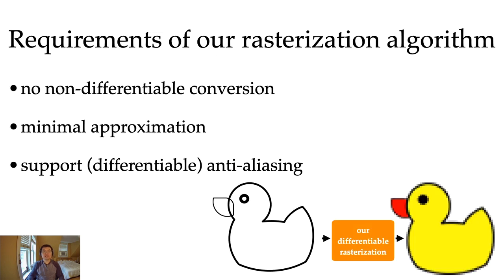Differentiable rasterization leads to some requirements of our rasterization algorithm. Firstly, some rasterization algorithms need to convert shape formats in non-differentiable ways. We don't want to do that. Next, because we are using the differentiable rasterizer in some optimization, we want minimal approximation since the optimization process can produce arbitrary shapes. Finally, as we mentioned earlier, we need to support anti-aliasing and differentiate it. Based on these requirements, I will discuss our rasterization algorithm.